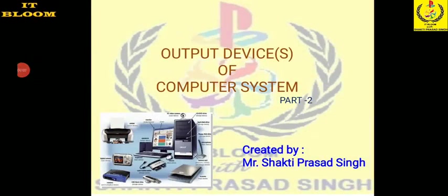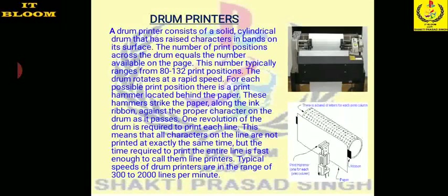Hello friends, today I am going to discuss the second part of output devices of computer systems. In the previous part we discussed monitors and printers — different types of printers: chain printer, daisy wheel printer, dot matrix printer. Today we are moving forward to the second part, starting with the drum printer.